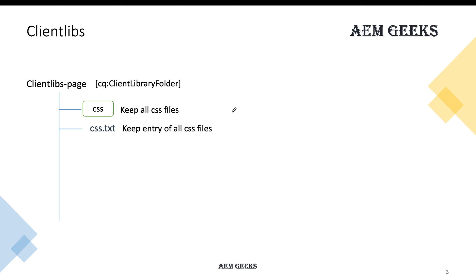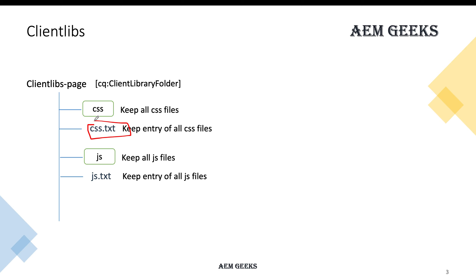We use the name 'css' as a standard across AEM everywhere. Similarly, we create one more folder called 'js' and a corresponding file called js.txt. These folders are used to keep your CSS files and JavaScript files inside. I'll explain the purpose of the text file shortly.